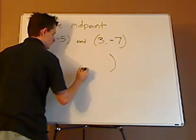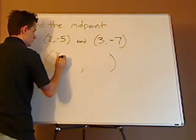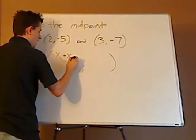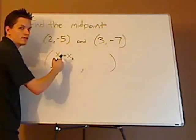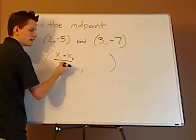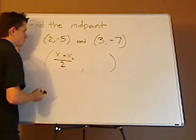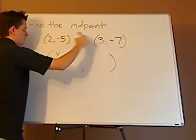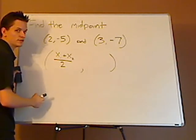It's the average of the x's. Average means that you add them together and divide by the number of items. You have two points, two x's, so you divide by 2.